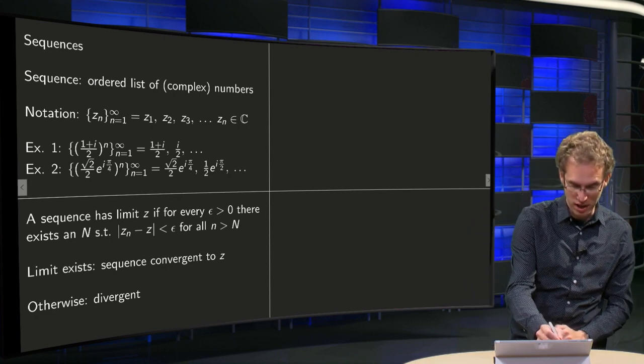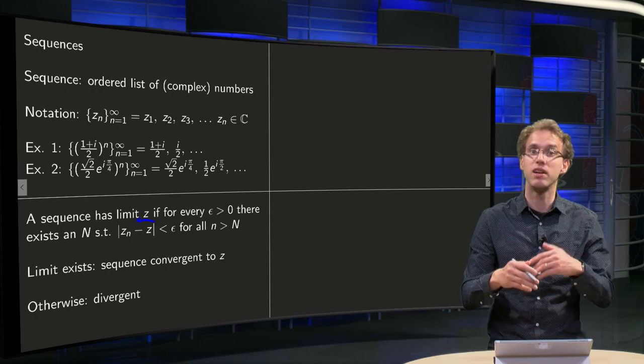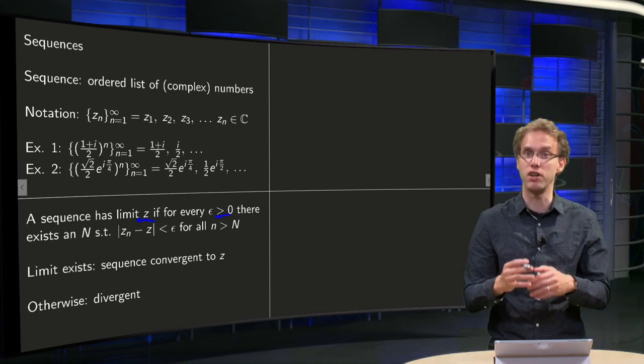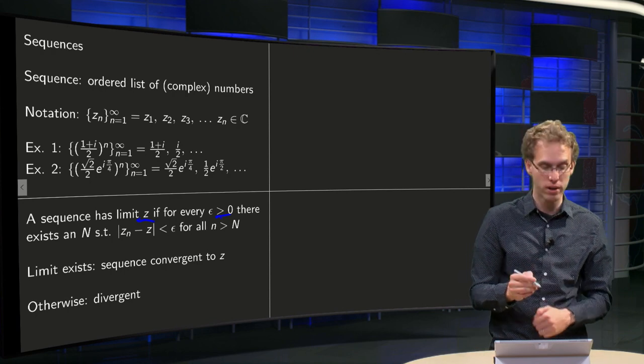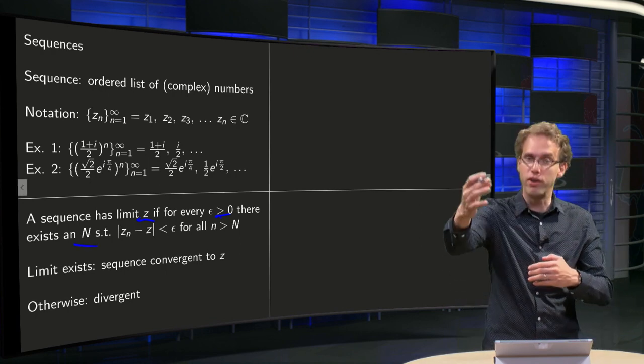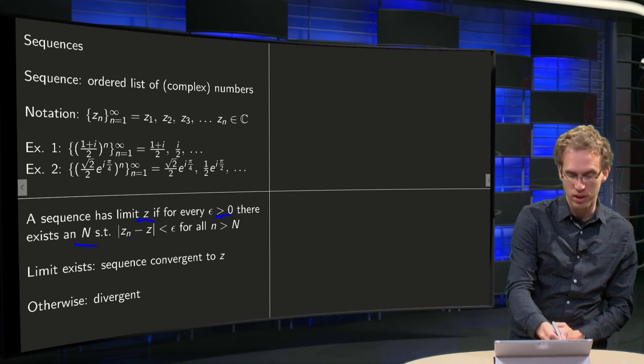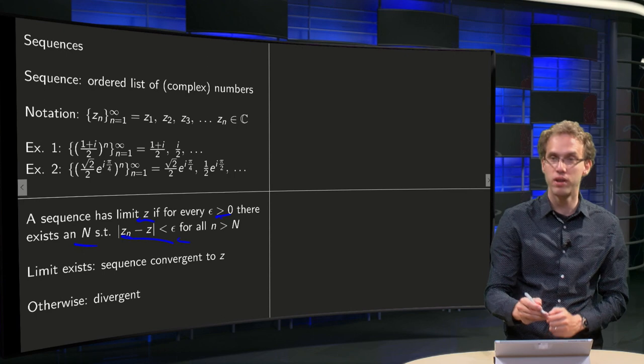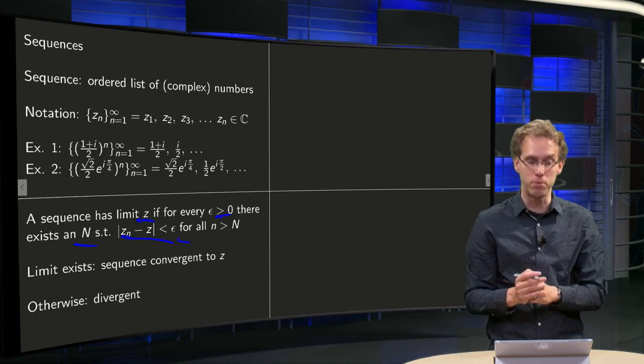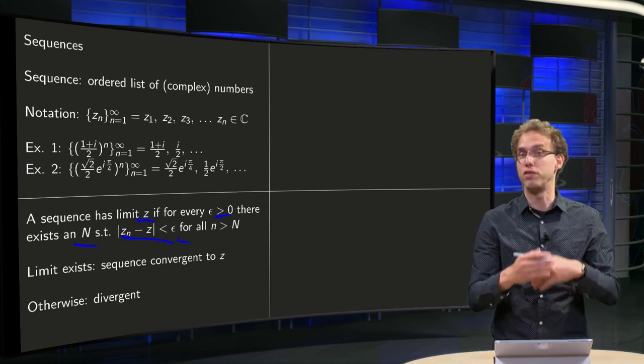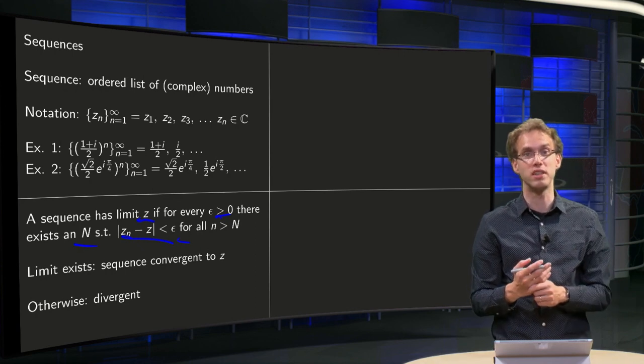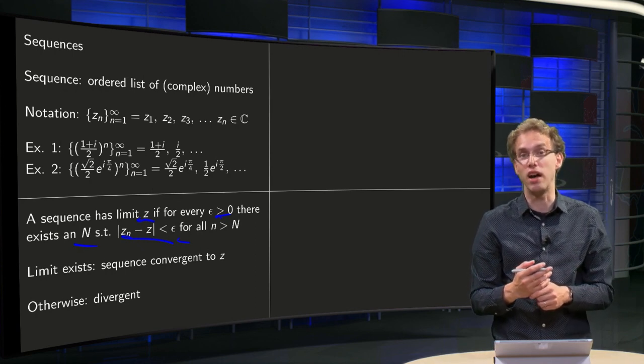So a sequence has a limit z if you can get as close to it as you want. So if for any ε > 0, which is probably some small number, you can find a capital N so if you are far enough in your sequence, such that your distance becomes arbitrarily small, smaller than this ε, as long as you are further than this capital N. If this limit exists, the sequence is called convergent, and if the limit does not exist, the sequence is called divergent.